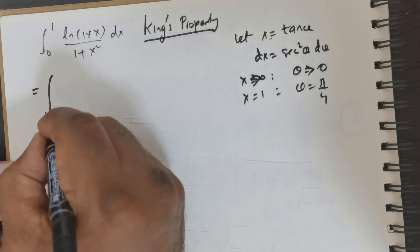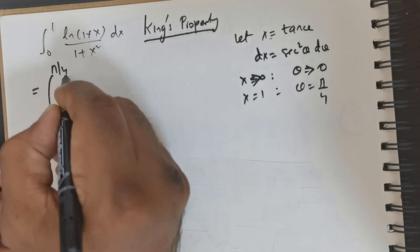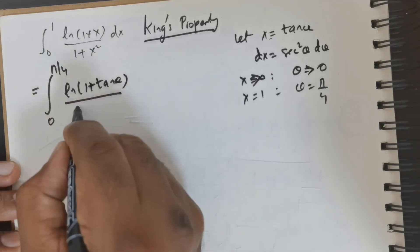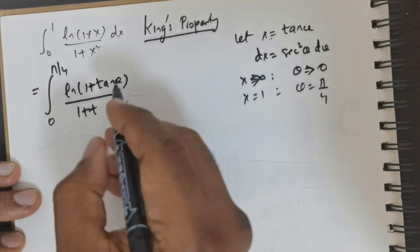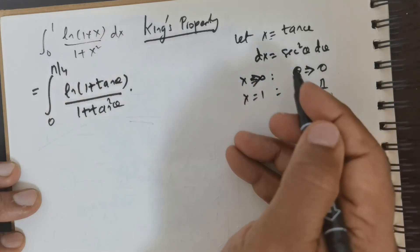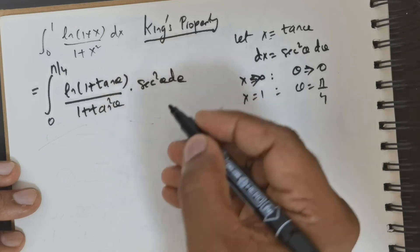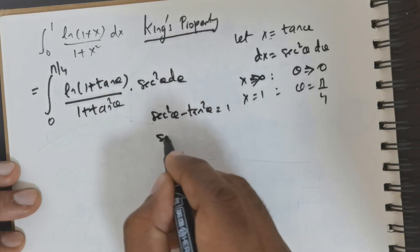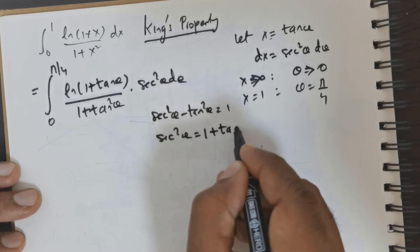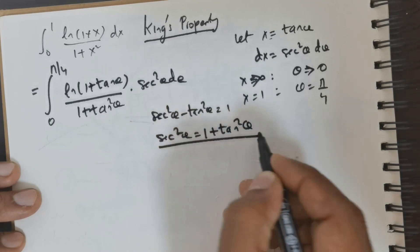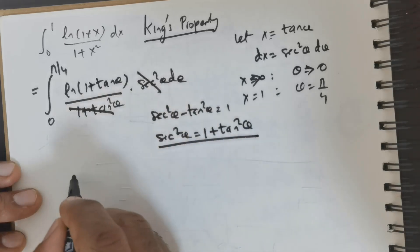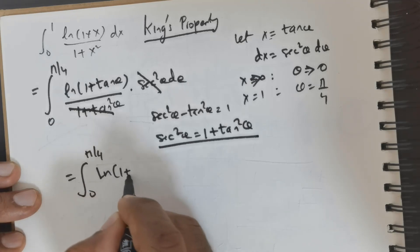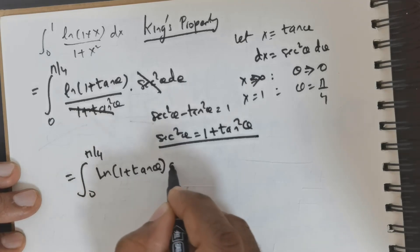So this integral becomes the integral from 0 to π/4 of ln(1 + tan θ) divided by (1 + tan²θ), times sec²θ dθ. Now we have the formula sec²θ − tan²θ = 1, so sec²θ = 1 + tan²θ. So the (1 + tan²θ) terms cancel, giving us the integral from 0 to π/4 of ln(1 + tan θ) dθ.